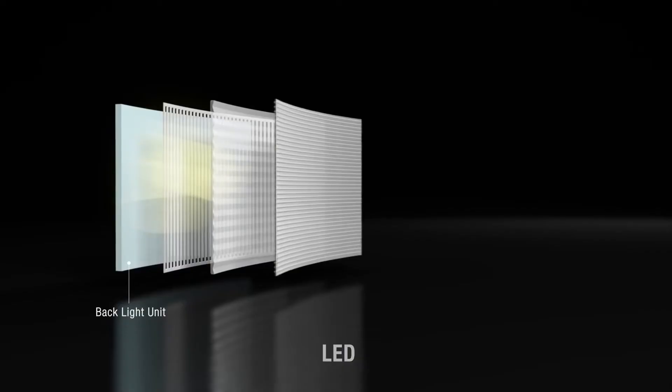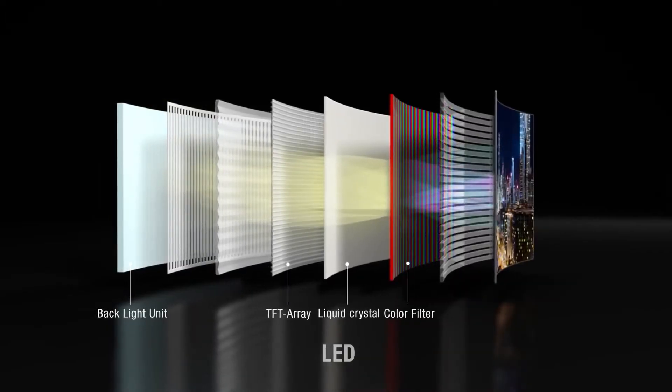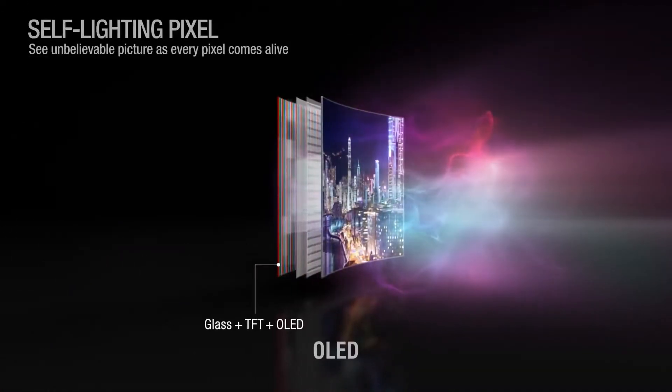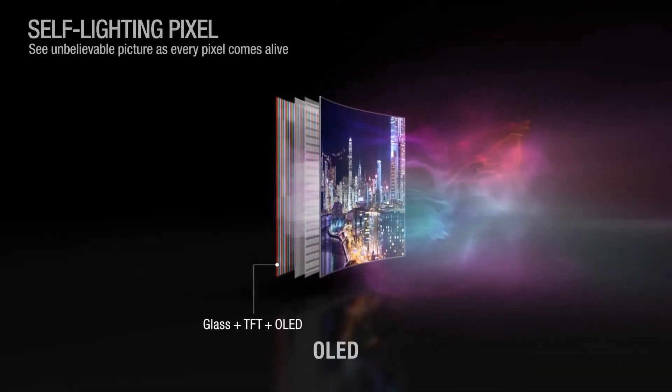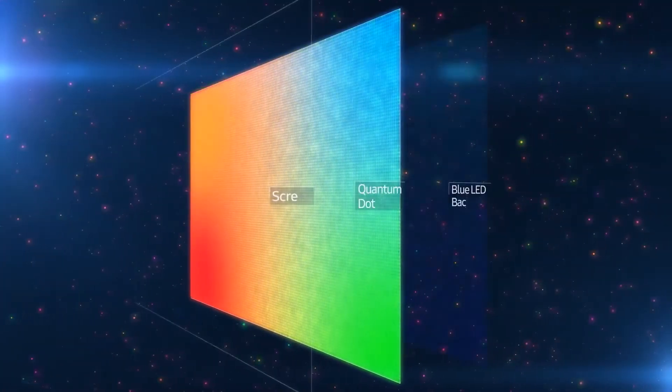Why do I say that? The OLEDs have individually lit pixels, meaning they can shut off completely, giving you deeper blacks and your shadows are gonna be a lot more crisp.